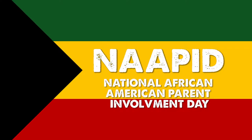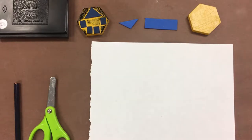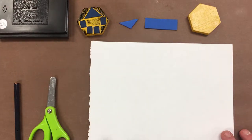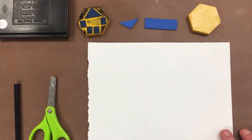Hello and welcome to a special NAPID edition of Smart with Art. Today we're going to make a stamp and use that on a piece of white paper to kind of replicate a Dinkra cloth.